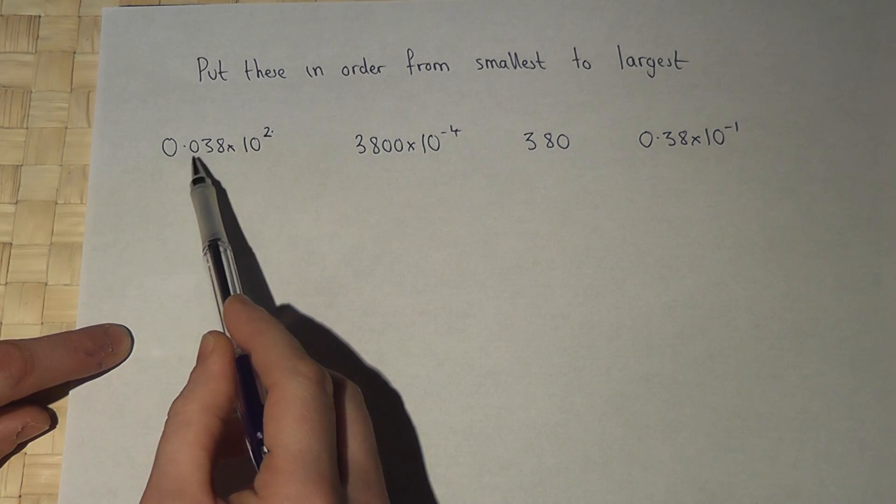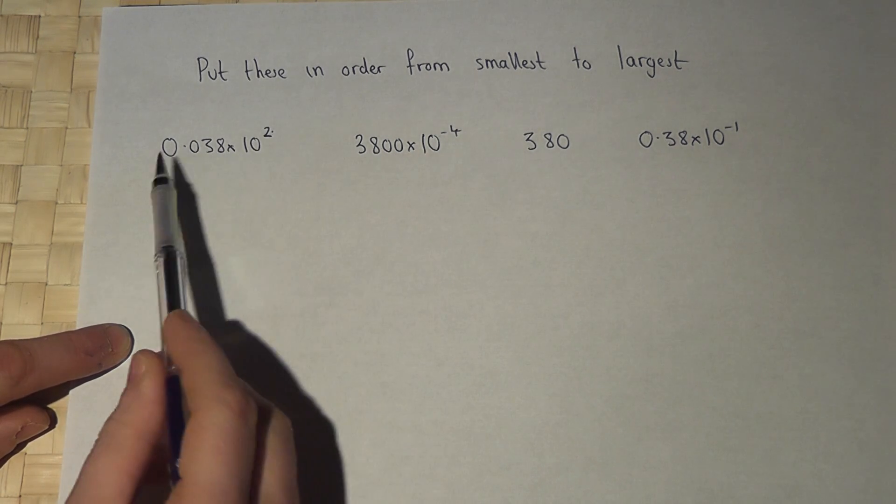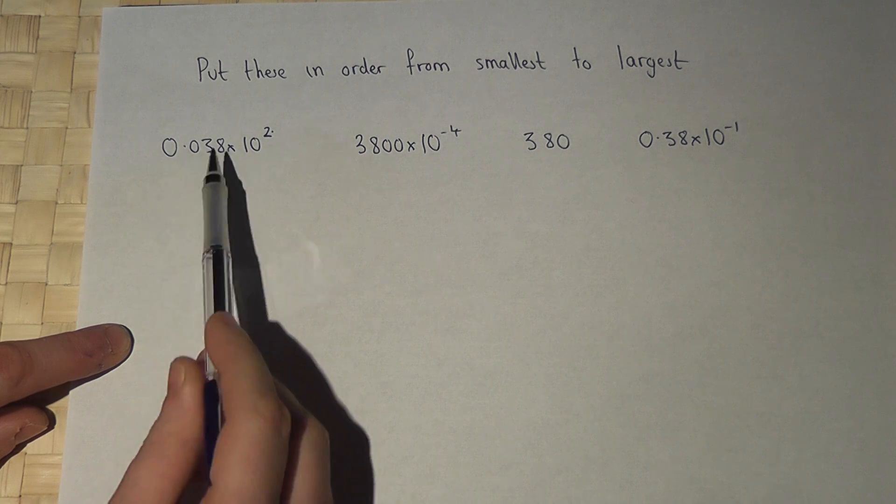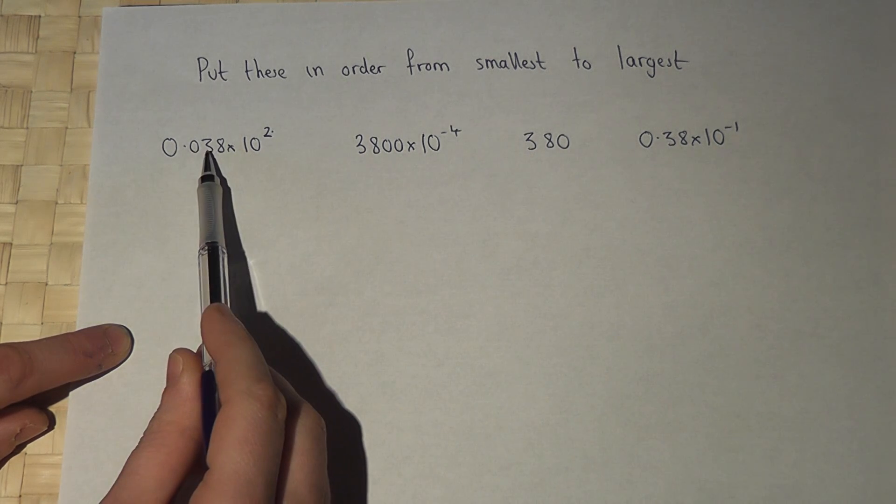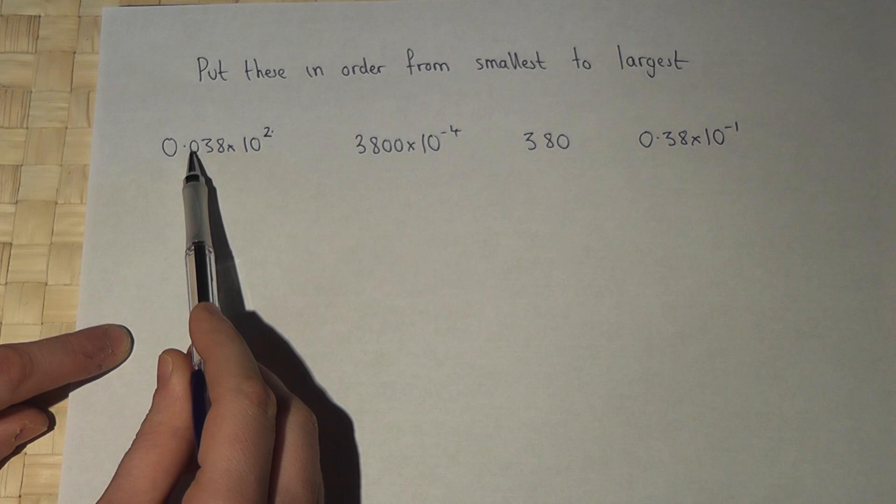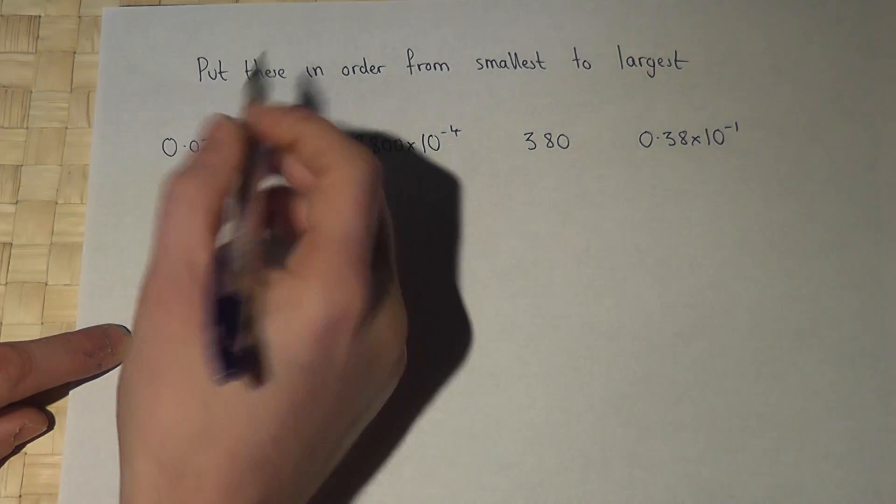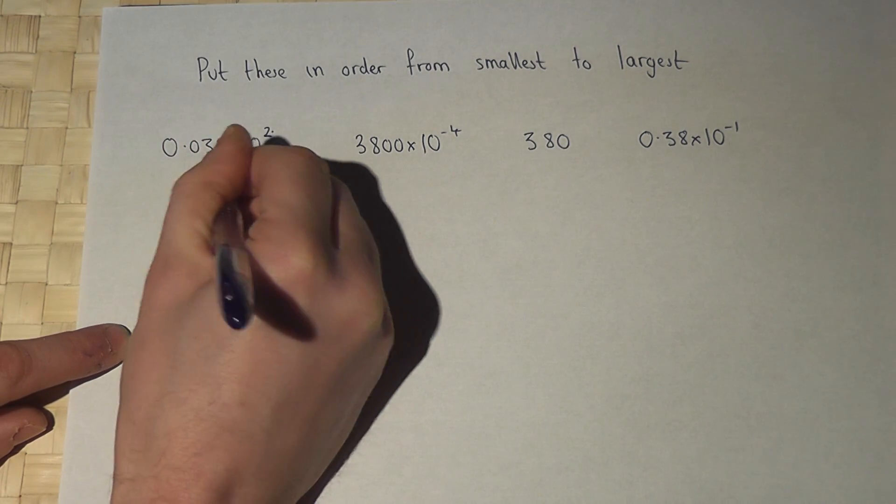Now 0.038 times 10 squared means times this by 10 twice. So 0.038 goes to 0.38 and then to 3.8. So this equals 3.8.